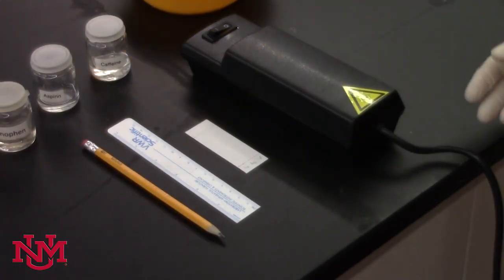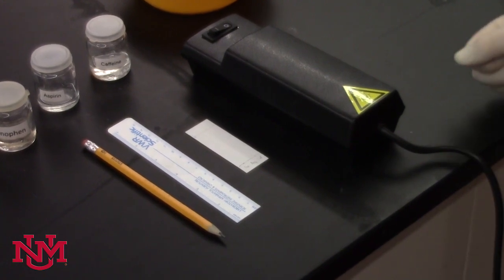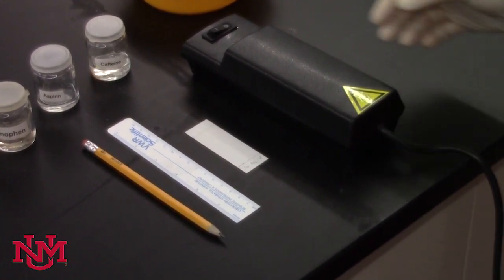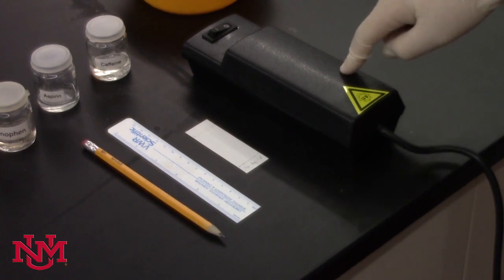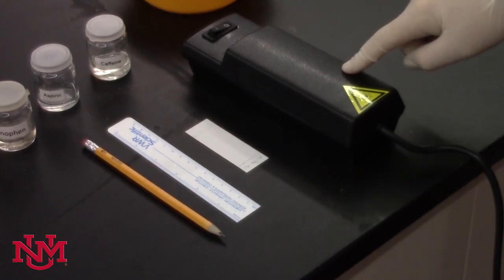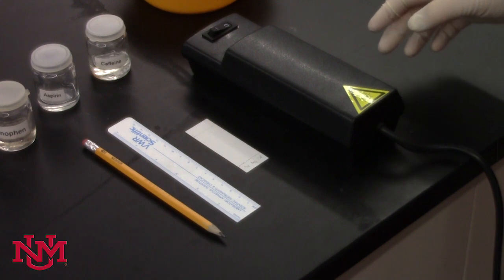We won't be able to tell if our TLC was successful unless we know we transferred sample to our plate. A UV lamp is one way of visualizing a TLC plate.